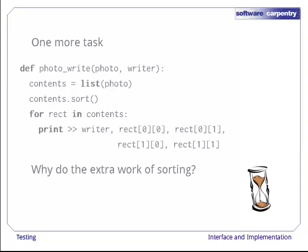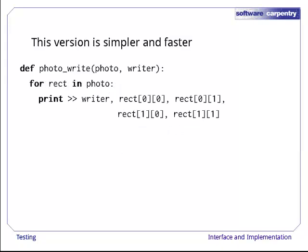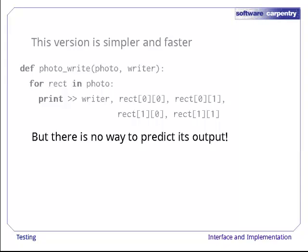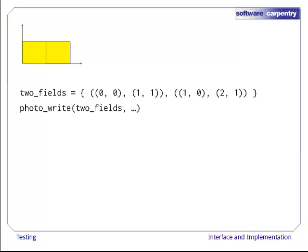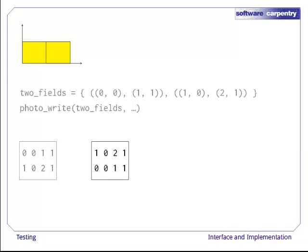Let's work backwards to the answer. This version of Photowrite2 is shorter and faster than the previous one. But there is no way to predict its output for any photo that contains two or more rectangles. For example, here's a simple photo showing two fields of corn ready for harvest. And here are two lines of Python that we might put in a unit test to represent the photo and write it to a file or a StringIO. You probably think the function's output will look like this, but it could equally well look like this with the rectangles in reverse order. These two representations are conceptually the same, but they're very different as text.